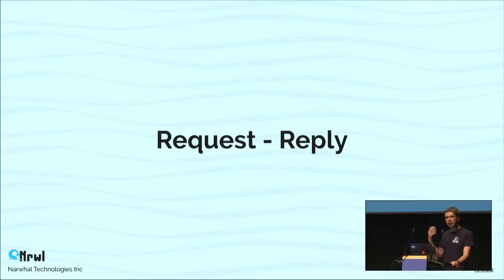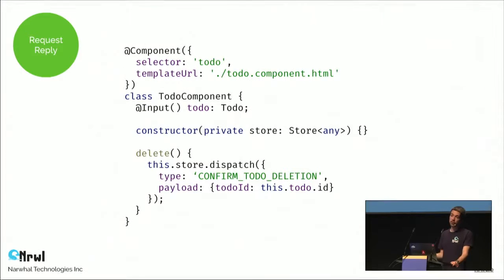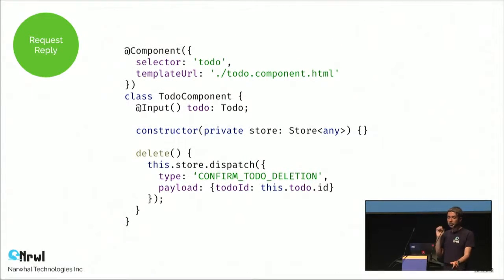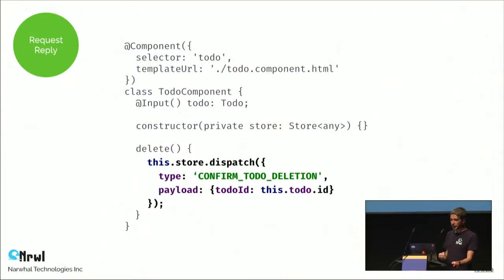The last thing regarding actions is the idea of request-reply. When we dispatch a command, we sometimes expect a reply, but the dispatch method doesn't return anything. So how do we get that reply? For example, with a component that has a delete method, we want to confirm the user's intent — but we can't do it locally because the confirmation may result in a URL change or other non-local effects. When using NGRX, non-local effects must be handled by effects classes. So we dispatch an action and then query the state to get that Boolean reply back.